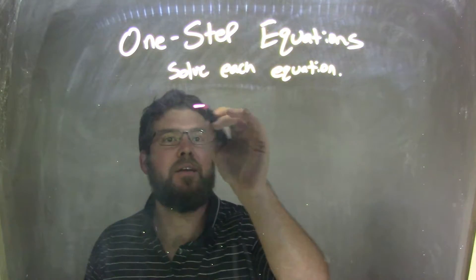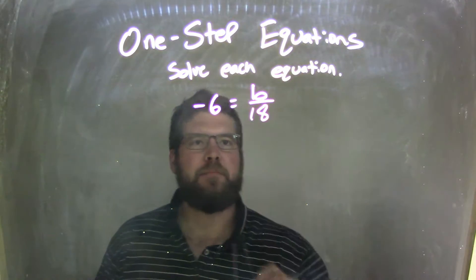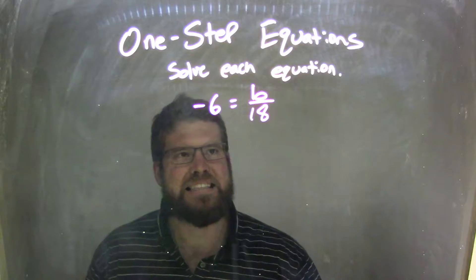So if I was given this equation, negative 6 equals b over 18, okay? So negative 6 equals b over 18.